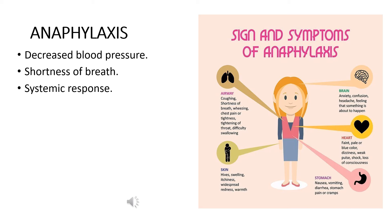In hay fever, the nasal passage and the respiratory tract get affected. In asthma as well, the respiratory tract, the bronchioles and the trachea, get affected. In hives, the skin gets affected. But in the case of anaphylaxis, this is a systemic response, meaning not only a single system or single organ gets affected, but multiple systems are getting affected simultaneously. So we can always guess that it is a more severe form of allergic reaction and it affects the body in a very fatal way.